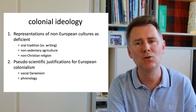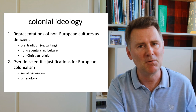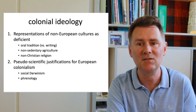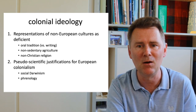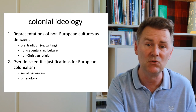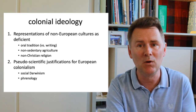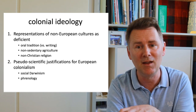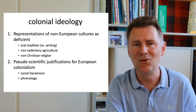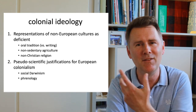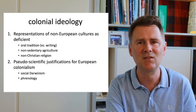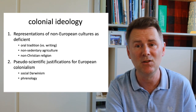Parts of colonial ideology involved representing non-European cultures as deficient — difference was seen as a shortcoming. This concerned, for example, oral culture as opposed to writing, non-sedentary agriculture where people move around instead of staying in one place, and of course differences in religion. And there were pseudo-scientific justifications for European colonialism — Social Darwinism is one example, measuring skulls, the science of phrenology.